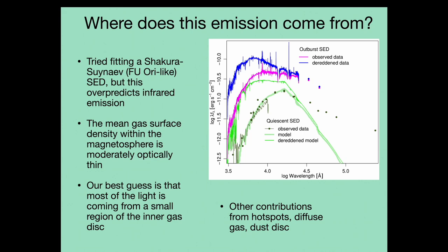Now that we've established that what we're actually seeing is circumstellar material, it raises the question of where this material is located in the YSO system. One option is that this outburst has structural similarities to a weak FU Ori outburst. To test this, we tried applying the FU Ori disk model developed by Adolfo Carvalho and Lynn Hillenbrand at Caltech. However, this model overpredicts the near-infrared emission, ruling out that scenario. The next possibility is that the emission comes from gas in the magnetosphere. However, after doing the calculations, it turns out that this gas is still marginally optically thin and thus cannot account for the rise in continuum. Ruling out these possibilities leaves emission from a small, hot region of the inner gas disk as the remaining option.